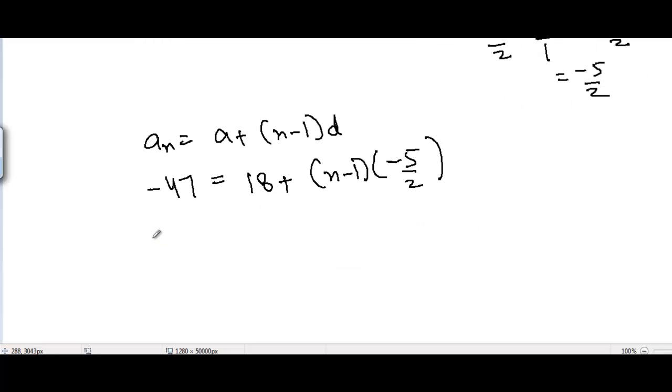Now we need to find the value of n here. So -47 = 18, and we can take LCM, or I can write -5n + 5, divided by 2 here.